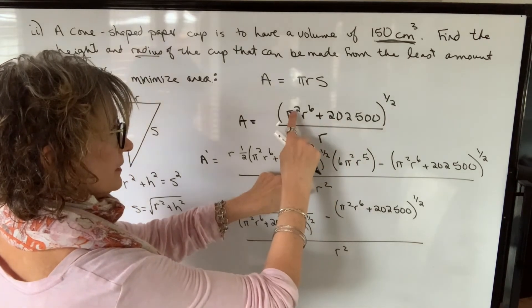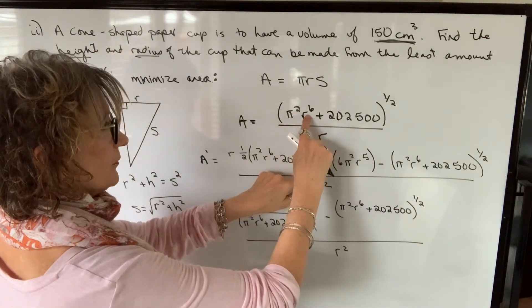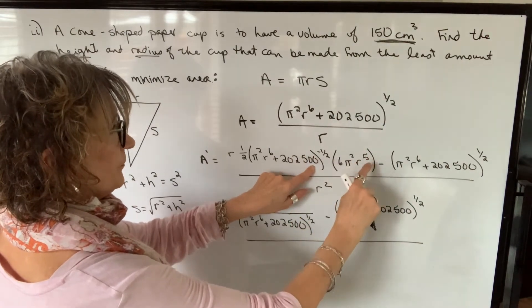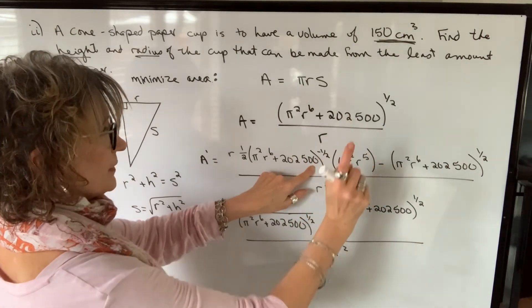So it's pi squared times the derivative of r to the sixth, which is 6r to the fifth. The derivative of that term is zero.